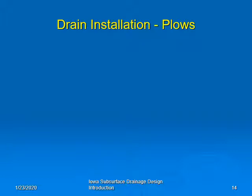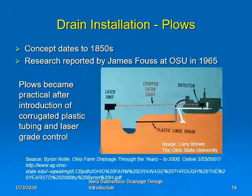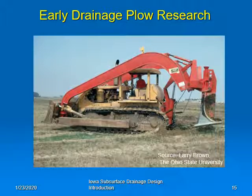The 1960s also saw the development of plows for drain installation. The concept actually dates to the 1850s, though they didn't have the material or the mechanization to utilize it at that time. Again in the 1960s and also at Ohio, James Faust did research on using plows for drain installation. Plows became practical after the introduction of corrugated plastic tubing and laser grade control. This is the machine used by Jim Faust for his research at Ohio State University.